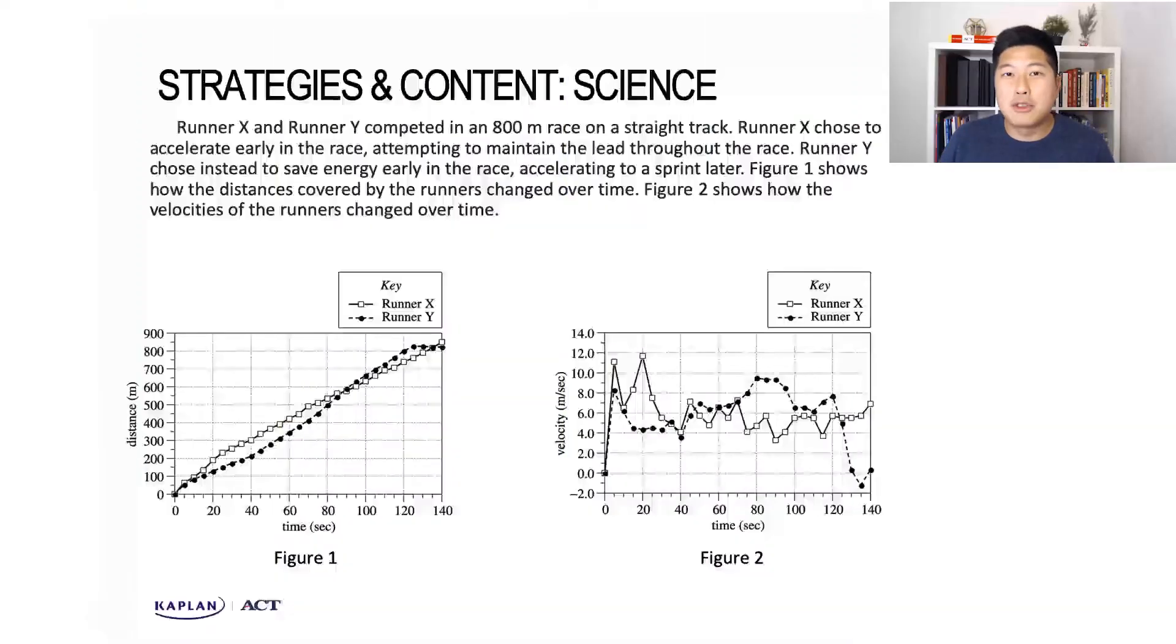In this experiment, we've got two different runners taking different tactics to finish this race. The first runner is choosing to accelerate early, and the second runner is choosing to accelerate later in the race. Let's take a closer look at the figures so we have a better idea of what information we have before we dive into the questions.